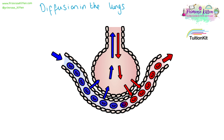Diffusion is a very important part of a wide number of biological mechanisms. It is seen in the lungs. At the very end of your airways, there are lots of little sacs that look like bunches of grapes — these are alveoli. They are surrounded by capillaries, tiny blood vessels where blood flows through. We get the diffusion of oxygen, O2, from the lungs into the blood, and the diffusion of CO2, carbon dioxide, from the blood into the lungs.